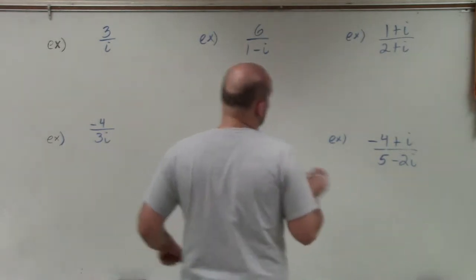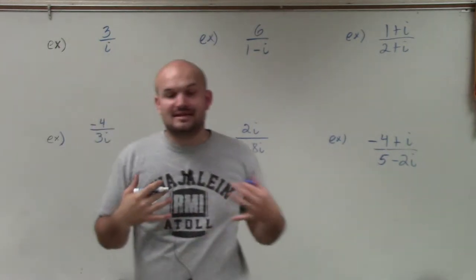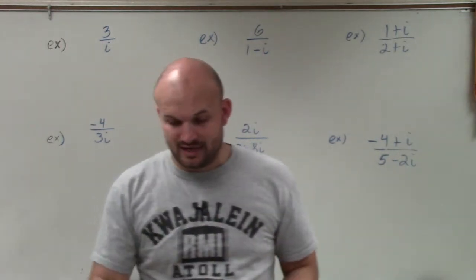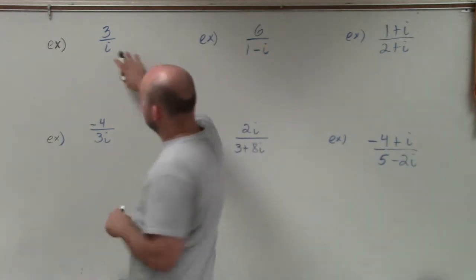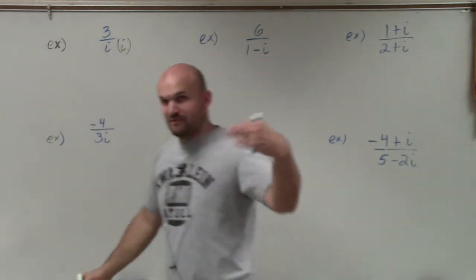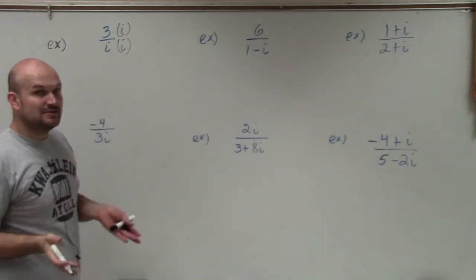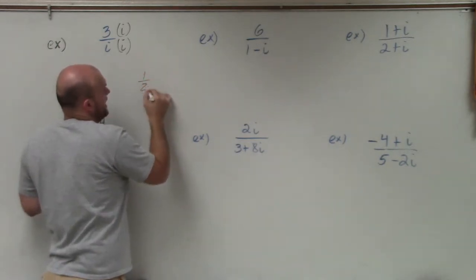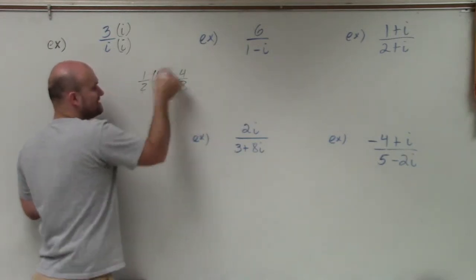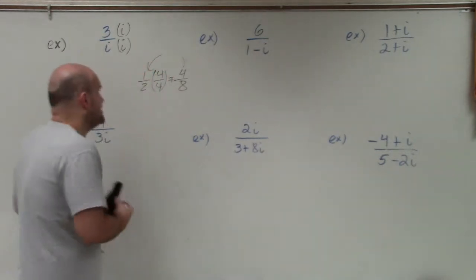Remember, i is our imaginary unit, i squared represents negative 1, and i equals the square root of negative 1. To eliminate i from the denominator, we can multiply by i over i. To produce equivalent fractions, whatever we multiply in the denominator, we multiply in the numerator. Just like with the fraction 1/2 — multiplying by 4 over 4 gives 4/8, which equals 1/2. As long as we multiply the same number top and bottom, we don't change the value of the fraction.